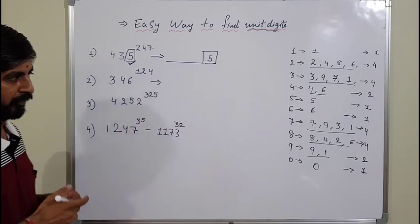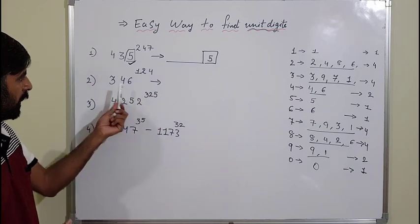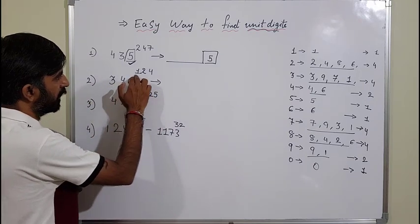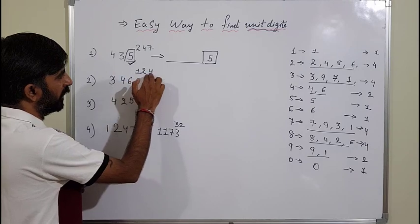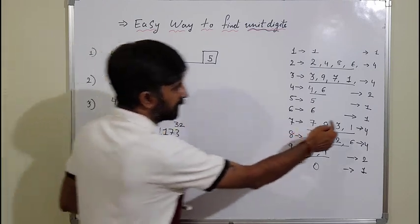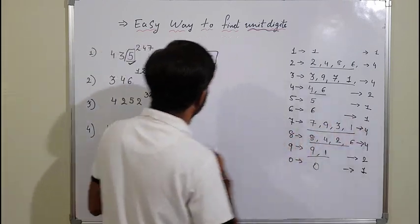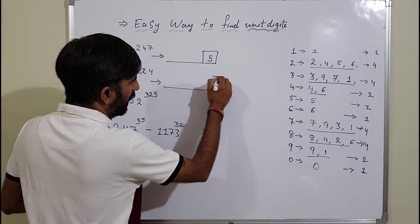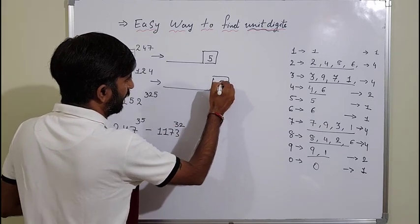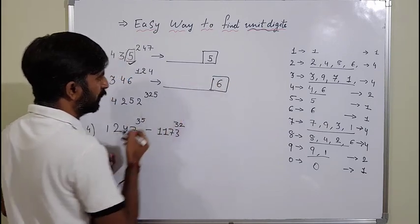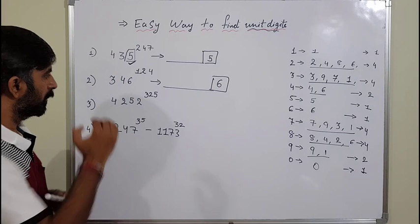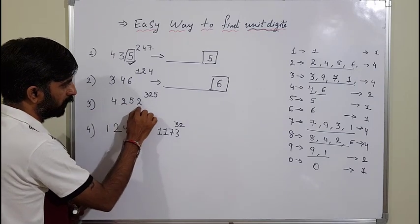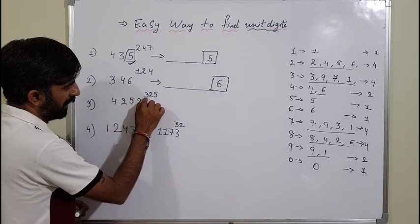Now consider 346 raised to 124. For 6, you always get unit digit 6 in any power, so directly you can say the unit digit will be 6. But for something like 4252 raised to the power 325, we end with 2, so there are 4 possibilities.